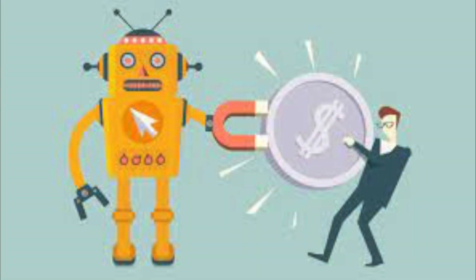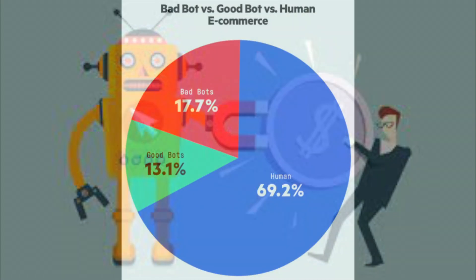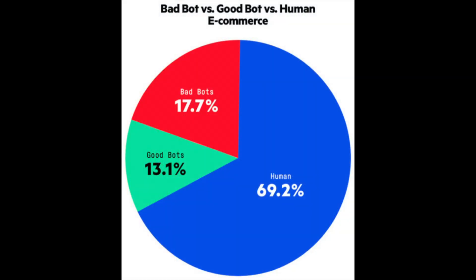Advertising companies are good at detecting bots, so if a website is monetizing through ads and there's click fraud, there is potential for the advertising company to ban the website and its owner from its network. Additionally, sites with limited inventory can be targeted by inventory hoarding bots. These bots go to e-commerce sites and load tons of merchandise into their shopping carts, making that merchandise unavailable for purchase by legitimate customers. This can also trigger unnecessary restocking of inventory.